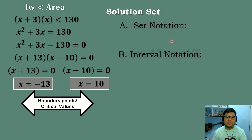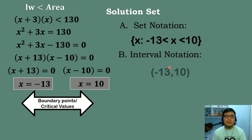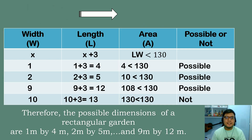Now we create the solution set. Since the inequality is strictly less than, the critical values are not included. In set notation: x such that x is greater than negative 13 and less than 10. In interval notation, x is between negative 13 and 10. So the numbers between negative 13 and positive 10 are the possible solution set.